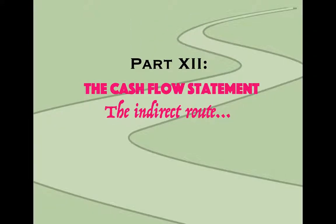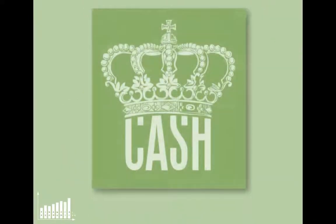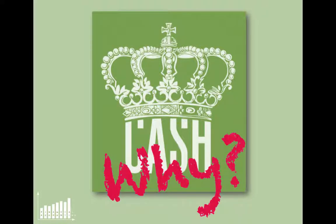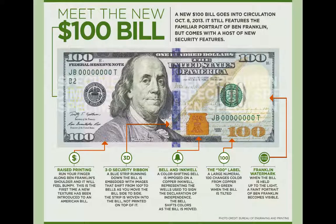It's part 12: cash flow statement, the indirect route. You may have heard it said before that cash is king. This diagram was put out by the Bureau of Engraving and Printing, going through the new hundred dollar bill that came out in October of 2013.